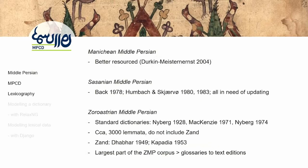When it comes to the various varieties of Middle Persian, Manichaean and Sassanian Middle Persian are relatively well taken care of because they only constitute a small part of the corpus — a few tens of thousands of tokens makes it easy to put together a dictionary. But even the Sassanian Middle Persian dictionaries are in dire need of updating. When it comes to Zoroastrian Middle Persian, the situation is more dire. We have a bunch of dictionaries that are older than me — one is almost a hundred years old — which only include 3,000 lemma, whereas in our corpus we have over 15,000.